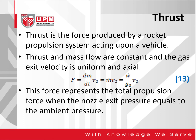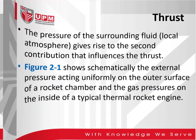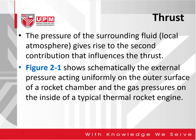Thrust itself is the force produced by a rocket propulsion system acting upon a vehicle. Thrust and mass flow are constant, and the gas exit velocity is assumed to be uniform as well as axial. It can be written as expression 13. This force represents the total propulsion force when the nozzle exit pressure equals the ambient pressure. The pressure of the surrounding fluid or local atmosphere gives rise to a second contribution that influences the thrust.